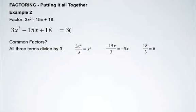So we'll remove the common factor 3, and we're left with 3 times x squared minus 5x plus 6.